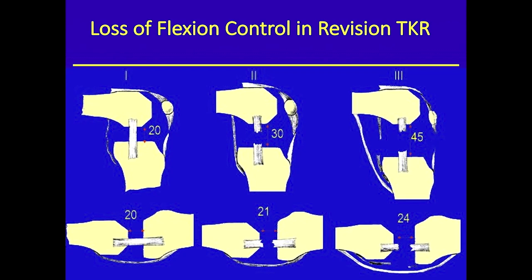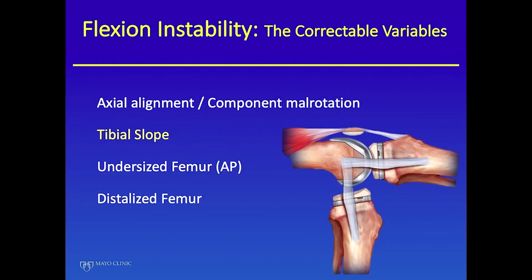That's what happens in a revision knee with flexion instability that gets recurrent effusions — they continue to stretch out the collaterals and the posterior capsule. When you see them, there's at least a centimeter or so discrepancy between the gaps. This is not because the surgeon did entirely the wrong thing; it's a progressive problem with the instability.